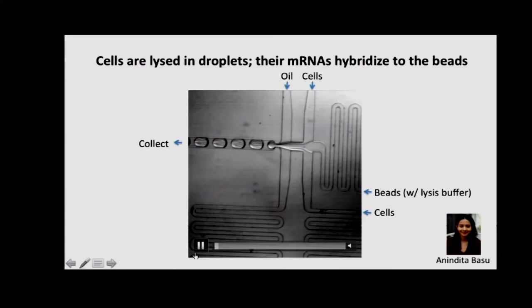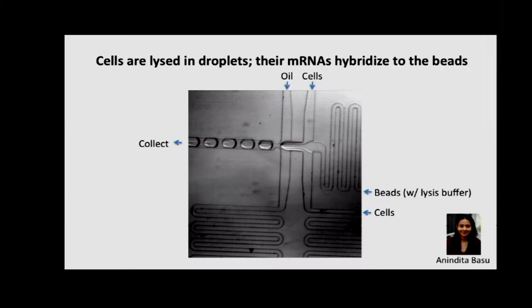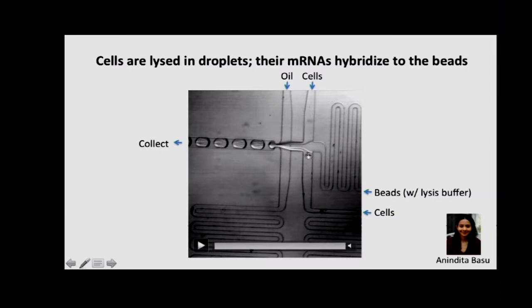This is what the microfluidic device looks like in action. All we're doing in this system is bringing together cells and beads into droplets. They're loaded at such a low concentration that almost every droplet doesn't have a bead or a cell, which gives single-cell resolution. This is a very slowed-down movie — you can see these nanoliter droplets being formed. The flows move so fast that you can actually see the refractive interface between the two phases. The lysis buffer has some glycerol in it, which gives it a thicker quality — that's why you can see the interface. There's no diffusion occurring at this point.